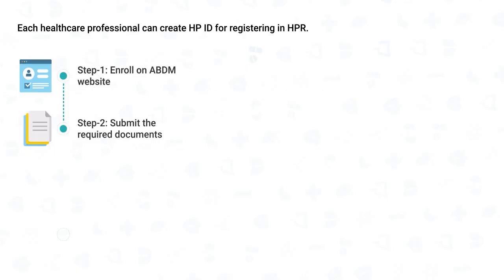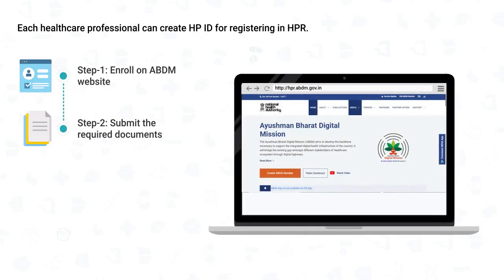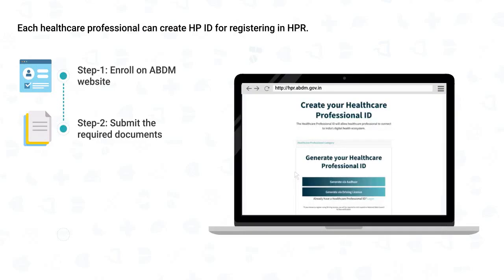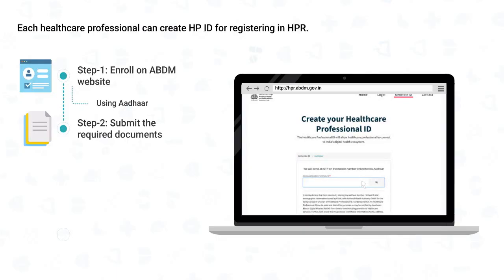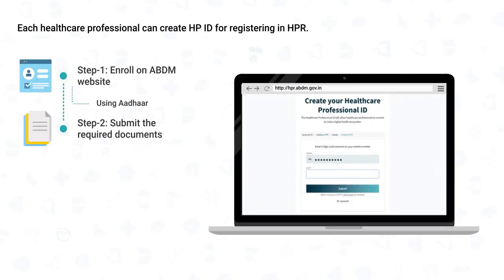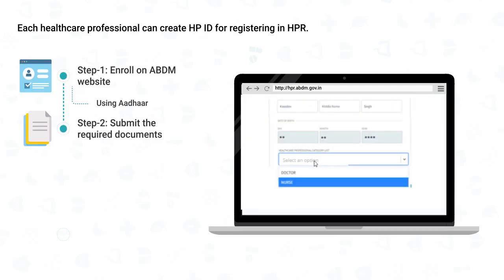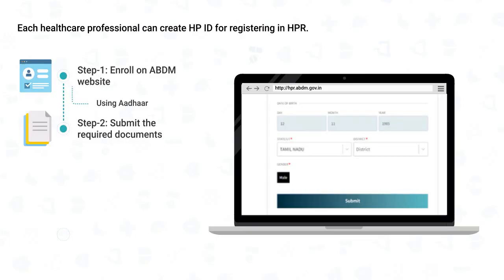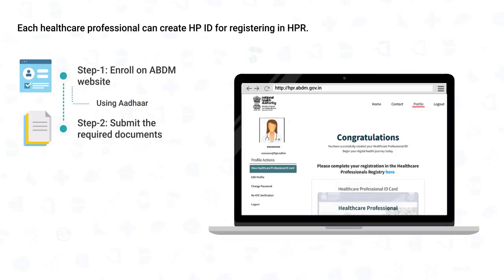Enrolling on the ABDM website: visit the URL hbr.abdm.gov.in, click on the link for registering new HPID, and select Aadhaar or Driving License to generate the ID. To generate HPID via Aadhaar: click Generate via Aadhaar, enter the Aadhaar number, accept the terms and conditions, and click Submit. Verify the Aadhaar with OTP, enter the mobile number and verify it with OTP. After mobile number verification, select the Healthcare Professional category, choose your HPID name and password, and click Submit. The HPID will be successfully generated and can be used to register in HPR.